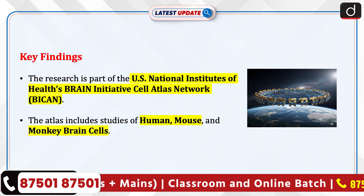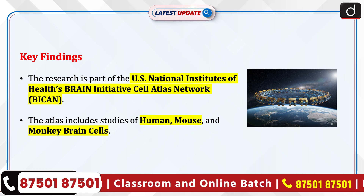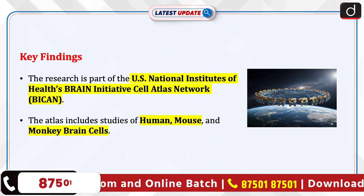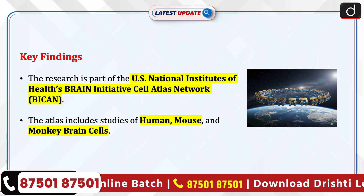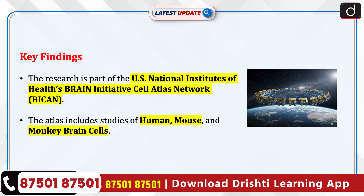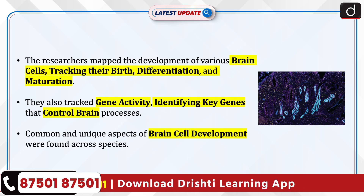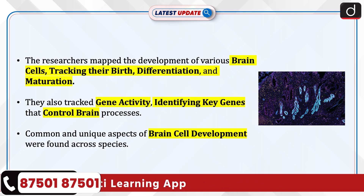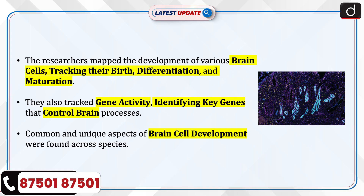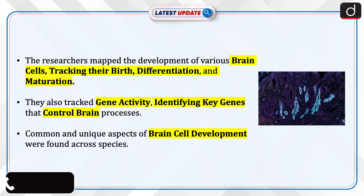The research is part of the U.S. National Institutes of Health's Brain Initiative Cell Atlas Network. The atlas includes studies of human, mouse, and monkey brain cells. The researchers map the development of various brain cells, tracking their birth, differentiation, and maturation. They also tracked gene activity, identifying key genes that control brain processes. Common and unique aspects of brain cell development were found across species.